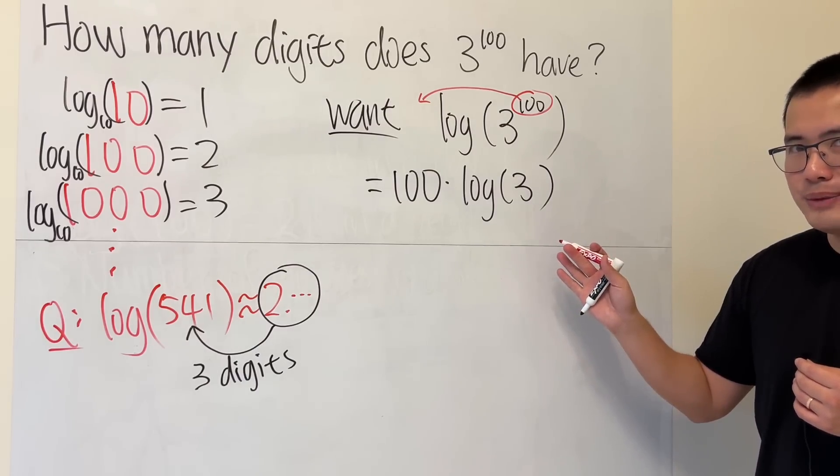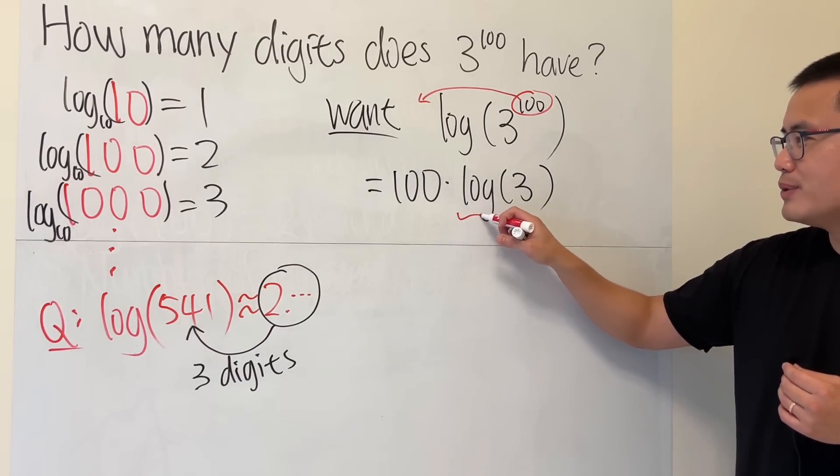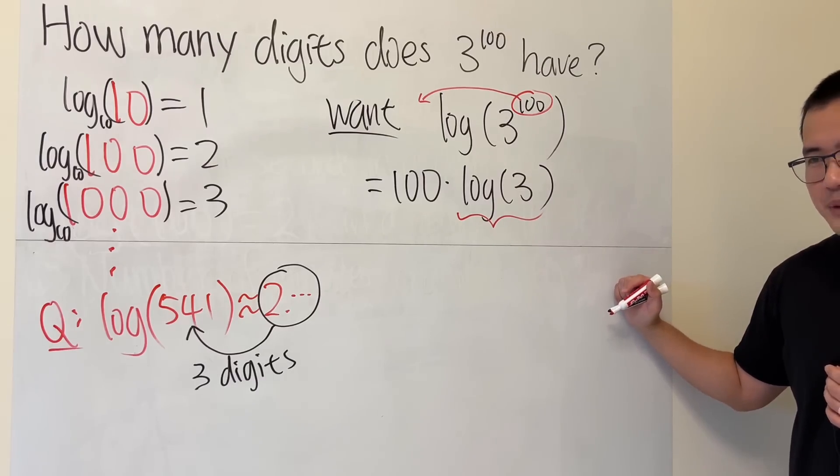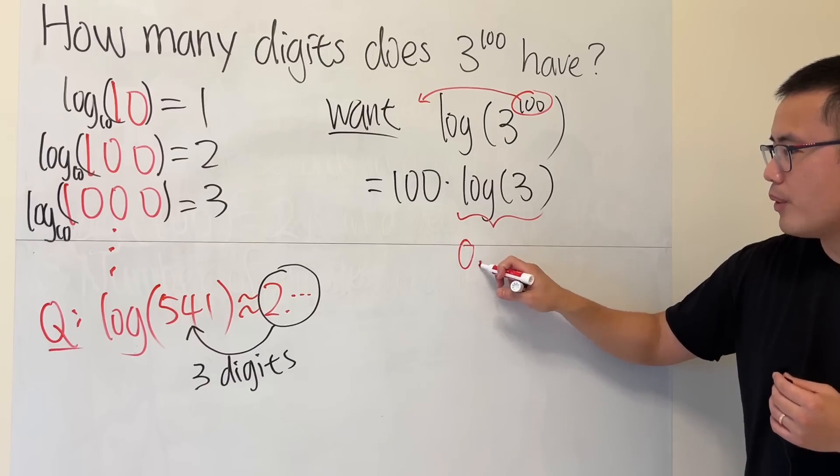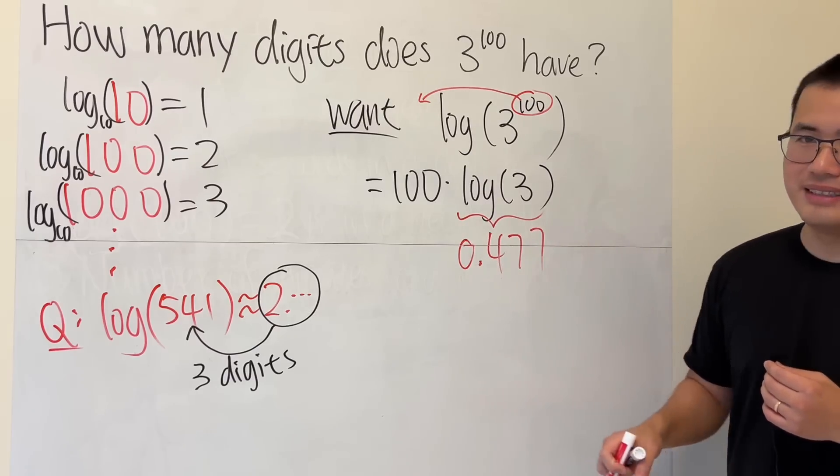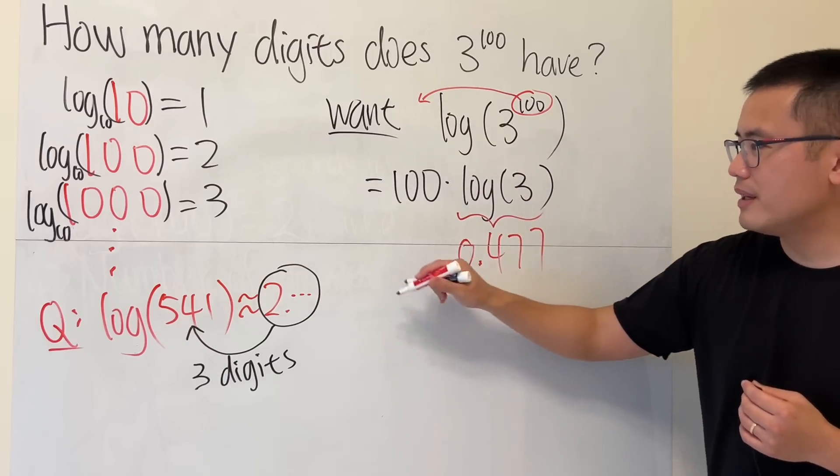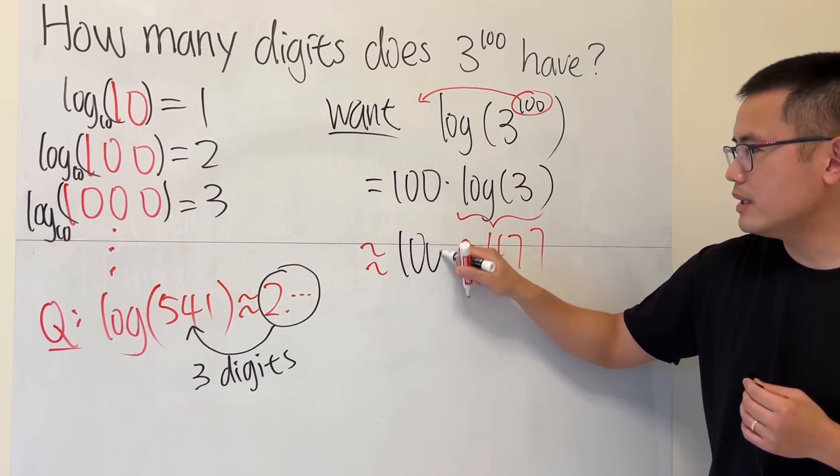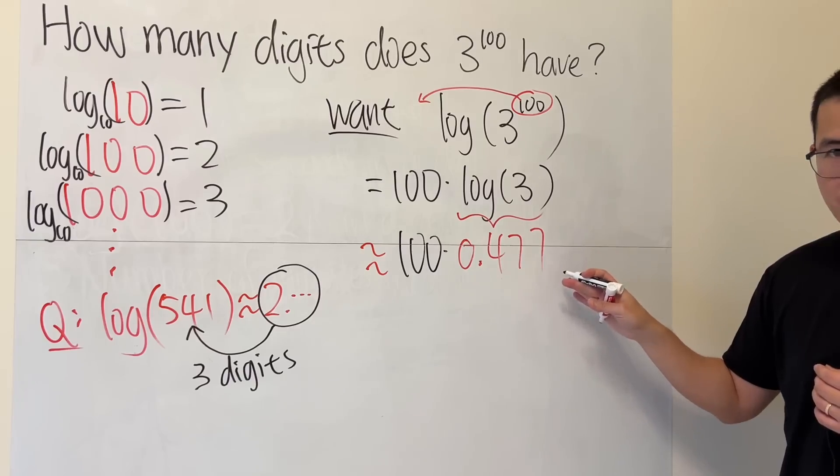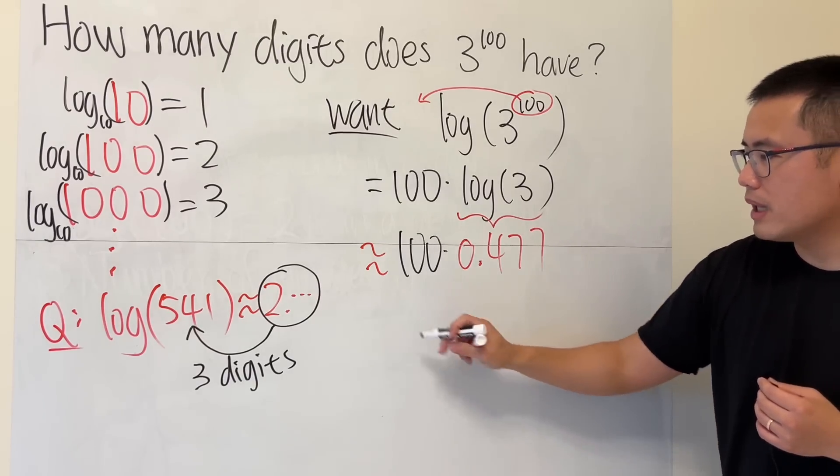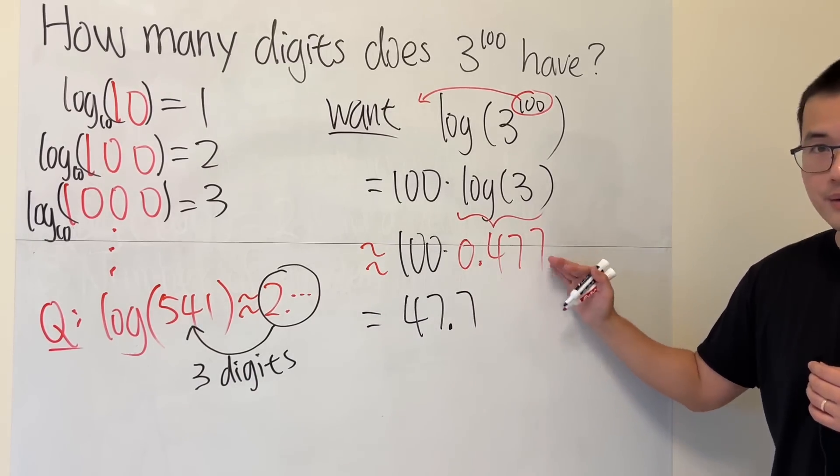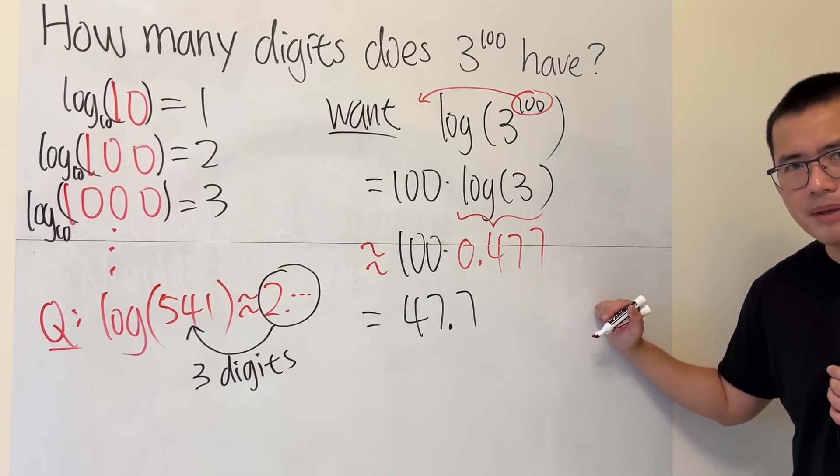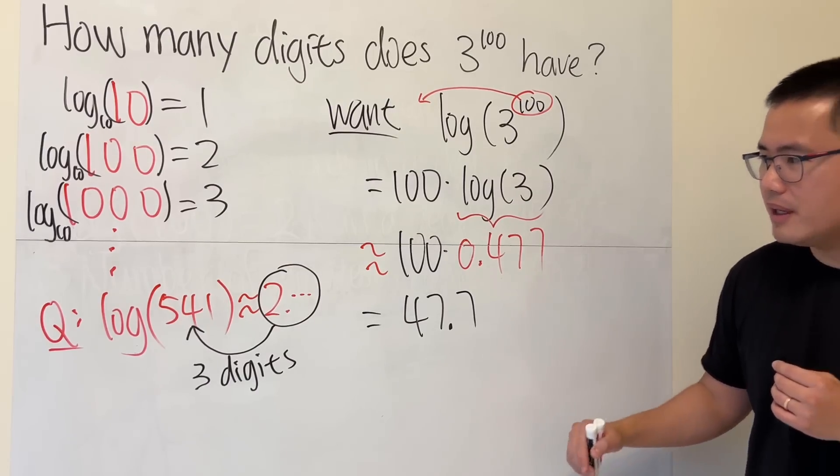To figure this out, you can try to remember the value for log of 3 or just use a calculator. I'll tell you this is approximately 0.477, so this is approximately 100 times 0.477. If you multiply, you get 47.7.